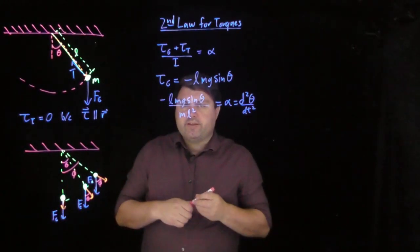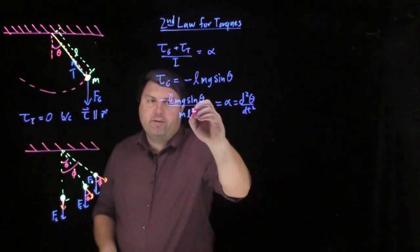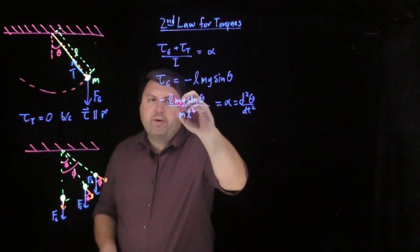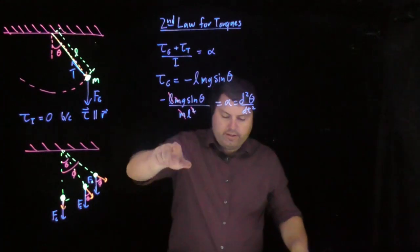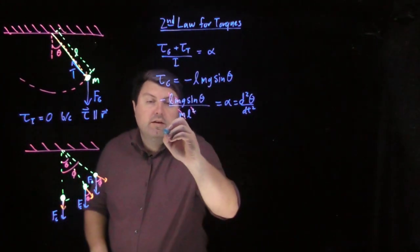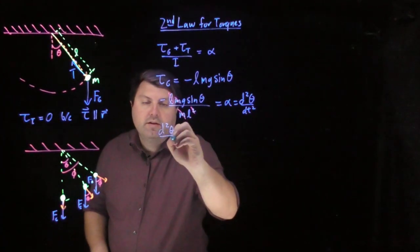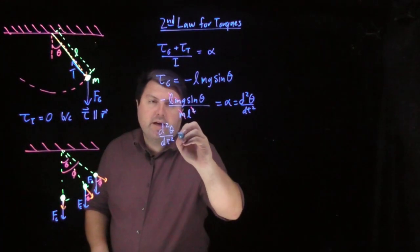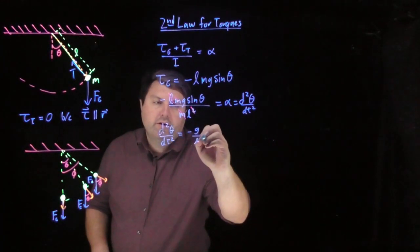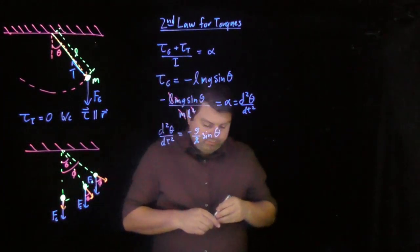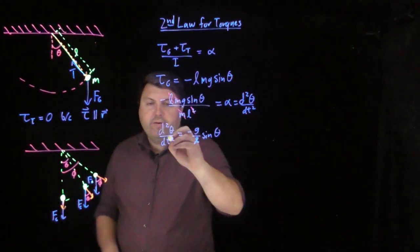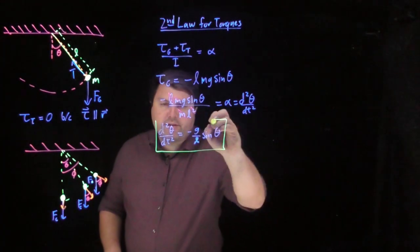So we can do a little bit of cancellation here. We've got an L on top, L on bottom, mass on top, mass on bottom. And we can move this d squared d theta dt squared over to this side. And we get negative g over L, sine theta. So if we want, this is our exact solution.